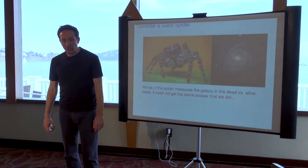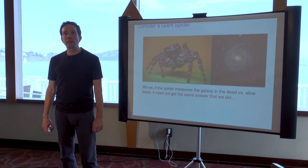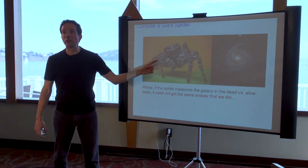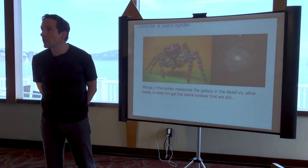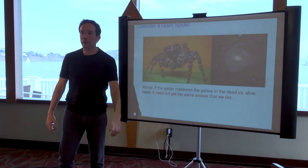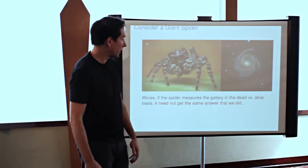So the spider can perform this measurement, and the worst thing about this story is that quantum mechanics tells us that the spider need not get the same answer that we got. The spider might actually find that the cat is alive if we found that it was dead. How can this be possible?